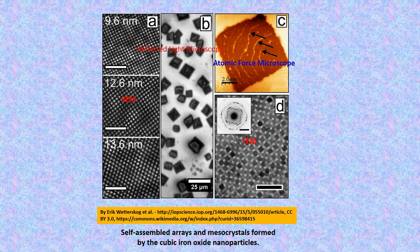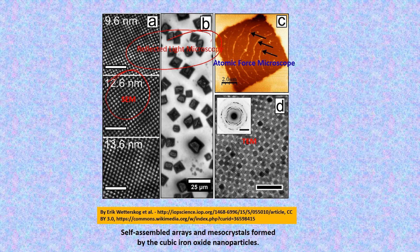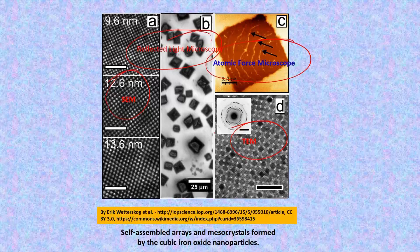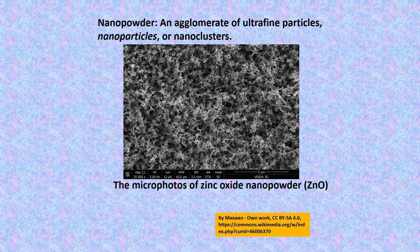For example, here we show self-assembled arrays and a meso-crystal formed by cubic iron oxide nanoparticles. These are pictures taken by scanning electron microscope; this one is taken by reflected light microscopy. This picture is taken using an atomic force microscope and these are nano crystals. We also get nano powder, which is an agglomerate of ultra-fine particles — these are nanoparticles or nano crystals. Here we show micro-photos of zinc oxide nano powder, ZnO.